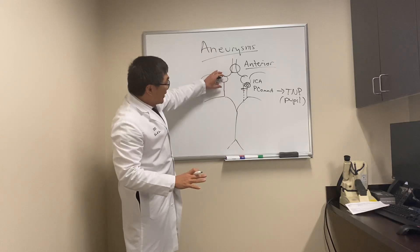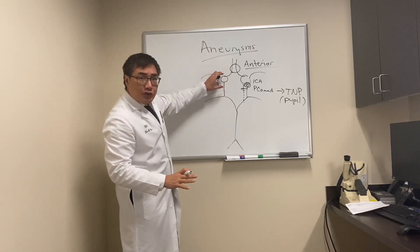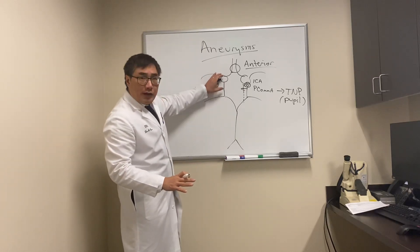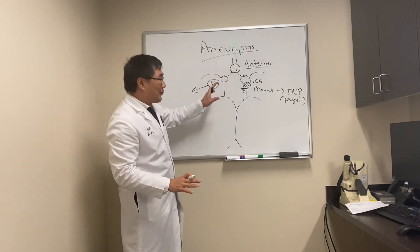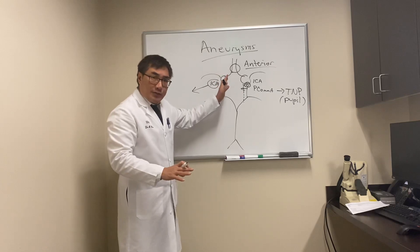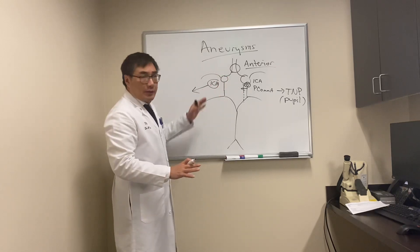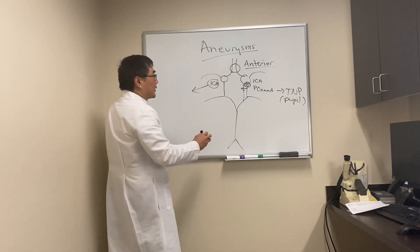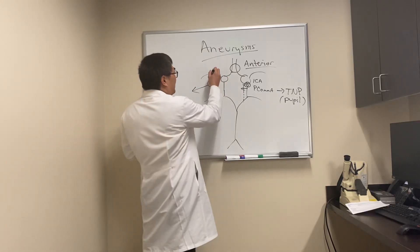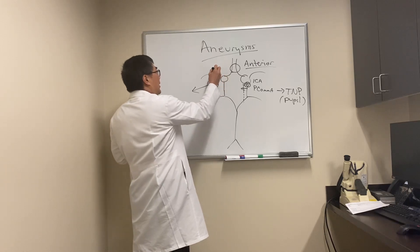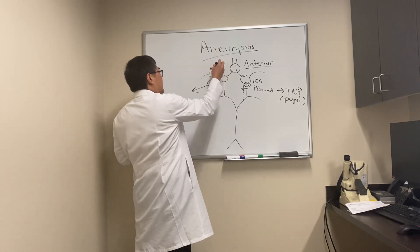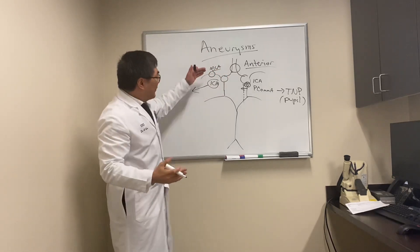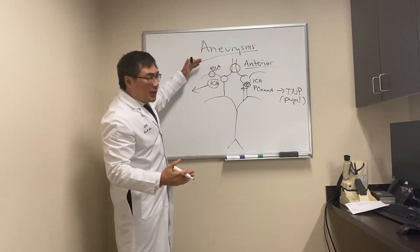The suprasellar aneurysm can produce an optic neuropathy or a chiasmal problem such as a bitemporal hemianopsia. The ophthalmic artery takeoff is the first intracranial branch of the internal carotid artery, so ophthalmic artery aneurysms can present with optic neuropathies and vision loss.